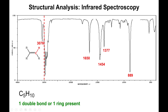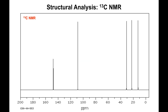The IR peak at 3076 cm⁻¹ tells us we're dealing with an alkene. This is further corroborated by a medium-strength peak at 1650 cm⁻¹, which corresponds to a carbon–carbon double bond. The peak at 3076 confirms there is a C–H bond on the alkene itself. This rules out the ring structure — we definitively have an alkene.